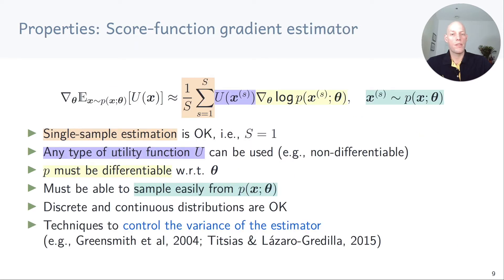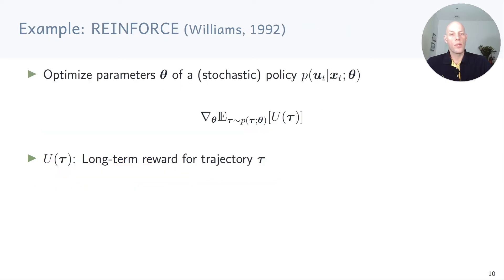Let's look at some properties of the score function gradient estimator. We can use a single sample to get an unbiased estimator of a gradient, and there are no restrictions on the utility function — for example, it can be non-differentiable. However, the distribution p must be differentiable with respect to theta, and it must be easy to sample from p. In practice, we need techniques to reduce the variance of the estimator. In reinforcement learning, a concrete example is the REINFORCE algorithm, which computes gradients of an expected long-term reward with respect to the parameters of a stochastic policy.